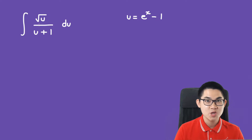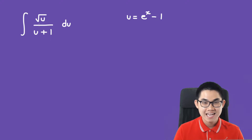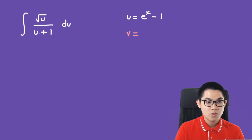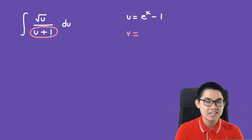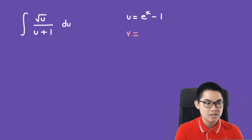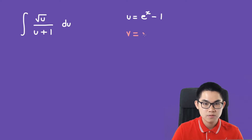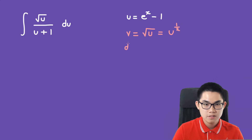It turns out we have to use u-substitution again, and this time we'll use the letter v. We have two options, but setting v equal to u plus 1 doesn't work because we cannot cancel out the numerator. So we set v equal to the square root of u, which is u to the power of 1 over 2.